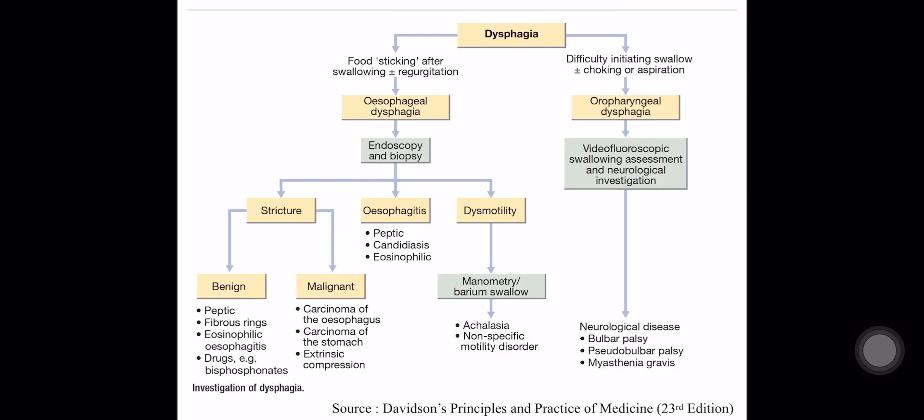Dysmotility disorder can be assessed by manometry or barium swallow. Causes may be achalasia or other non-specific motility disorders. Oropharyngeal dysphagia is mainly due to neurological disease like bulbar palsy, pseudobulbar palsy, and myasthenia gravis. I will describe these topics in detail in later videos, parts 2 and 3.